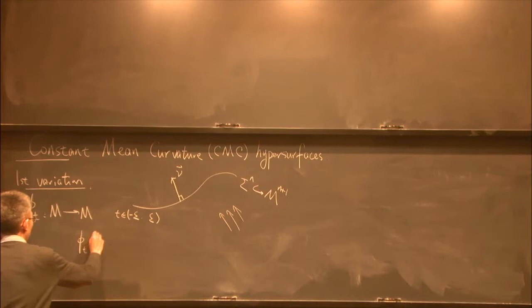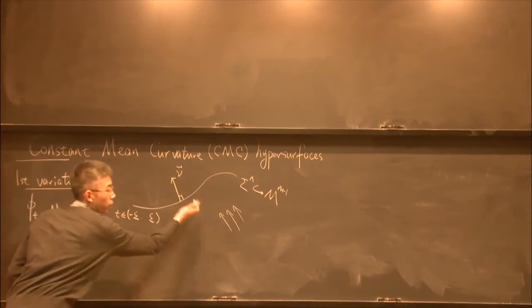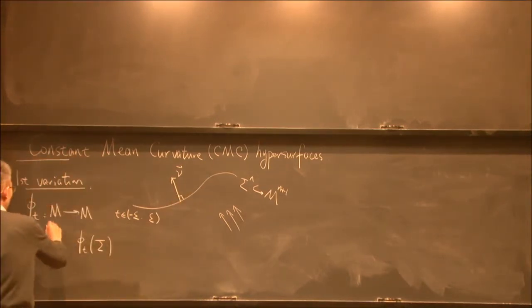We move the hypersurface by this flow. And at each time t, we can evaluate the area of the hypersurface. This is a function from t to this number. So we can take a derivative and let t go to zero.